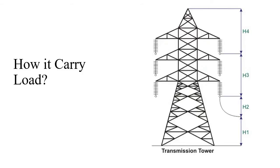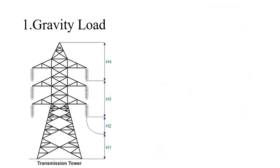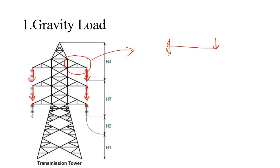After discussing the load-carrying strategy we will talk about the foundation design. First, let's understand how the structure carries gravity load. Gravity loads are mainly applied at the points where you are connecting your electrical wires. Now consider this particular part — if I say that this is a cantilever beam and you are applying a point load here, the action of load is more or less similar to a cantilever beam. In a cantilever beam the maximum bending moment occurs at the support.